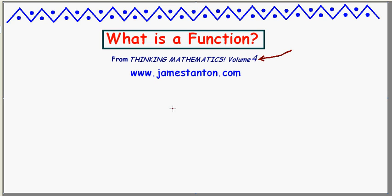First of all, in a very loose sense, a function is nothing more than a rule that goes from one set of objects to another set. Most people use the letter F — whatever rule they call it, they call it the function rule F. What it does is assign to each element of the first set one, and precisely one, element of the other set.